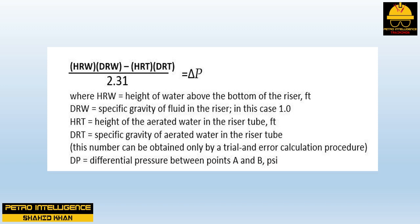We can calculate the pressure difference between points A and B as follows: (H_rw × D_rw − H_rt × D_rt) / 2.31 = ΔP, where H_rw equals height of water above the bottom of the riser in feet, D_rw equals specific gravity of fluid in the riser (in this case 1.0), H_rt equals height of the aerated water in the riser tube in feet, D_rt equals specific gravity of aerated water in the riser tube. This number can be obtained only by a trial-and-error calculation. ΔP equals differential pressure between points A and B in psi.